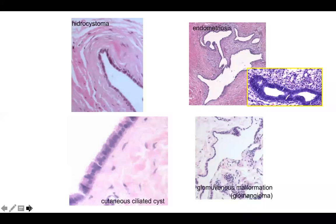Hydrosystoma has square cells that contain round nuclei, and here and there a layer of oval nuclei at the outer border. These oval cells are myoepithelial cells.